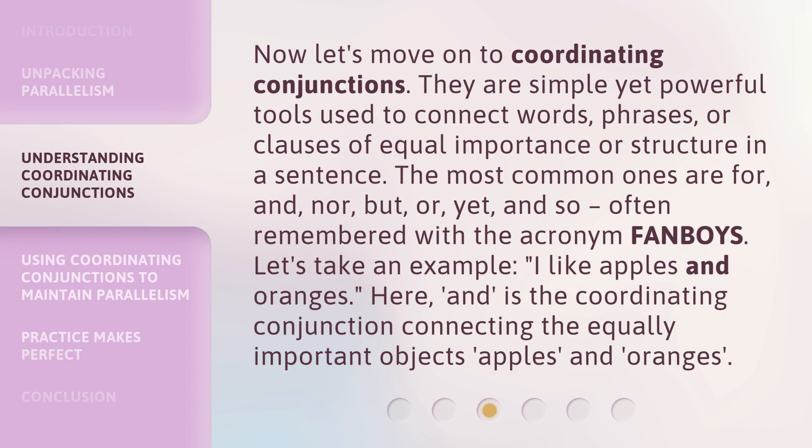Now let's move on to coordinating conjunctions. They are simple yet powerful tools used to connect words, phrases, or clauses of equal importance or structure in a sentence. The most common ones are for, and, nor, but, or, yet, and so — often remembered with the acronym FANBOYS.